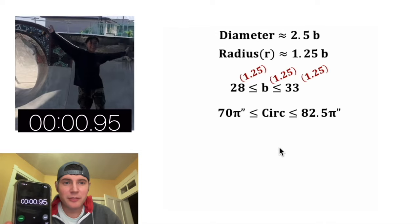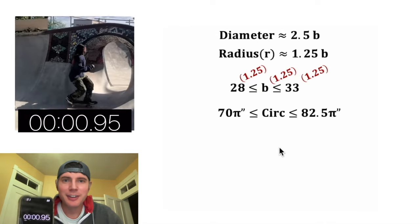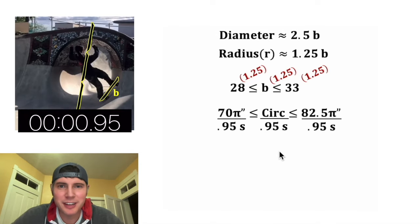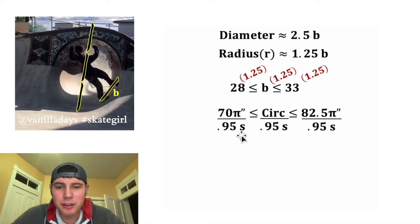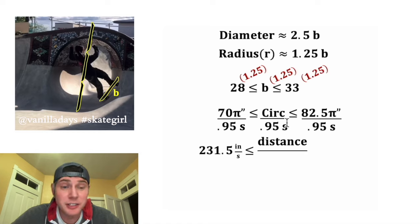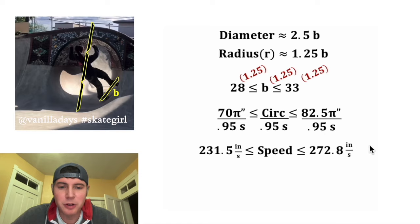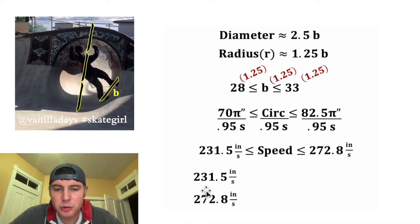Let's bring back our labels. Now let's figure out how long it takes her to do this. It took her 0.95 seconds to do the whole circle, so let's divide these by 0.95 seconds. 70π over 0.95 gives us around 231.5 inches per second, and then this fraction in the middle, circumference, is basically our distance. And 0.95 seconds is the time, and distance over time is basically the speed. And then 82.5π over 0.95 is approximately 272.8 inches per second. So she's traveling somewhere between 231.5 inches per second and 272.8 inches per second.